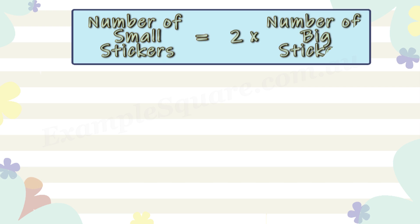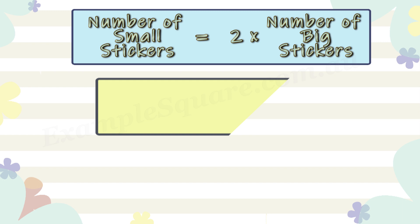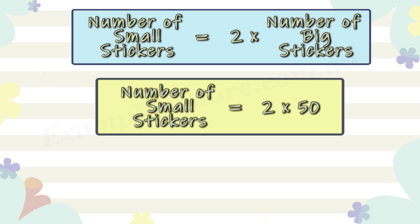The number of small stickers can be calculated as 2 times the number of big stickers, so the number of small stickers equals 2 times 50, which is 100.